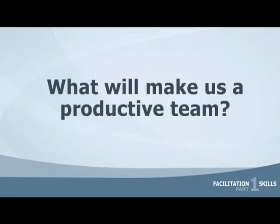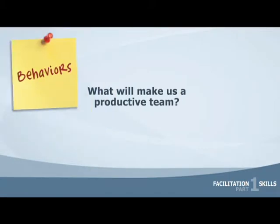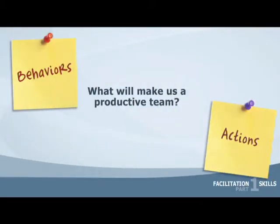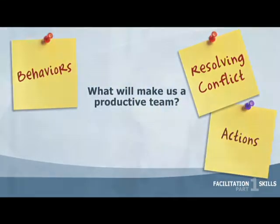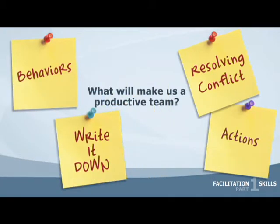Developing ground rules is a part of the process that we just can't skip. We can't assume that everyone can work together — they may have worked together in the past, but not for this specific task. Asking the key question, 'What will make us a productive team?' will establish the positive foundation. It's important to establish steps to resolve conflict during a neutral time before they actually happen, because conflict will happen, but it can be productive.